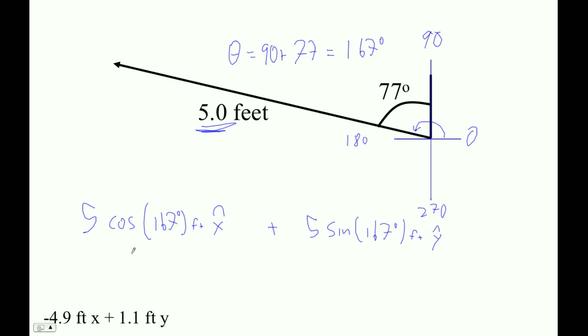So 5 cos 167, 5 sin 167. So this is negative 4.871 feet in the x direction plus 1.125 feet in the y direction.